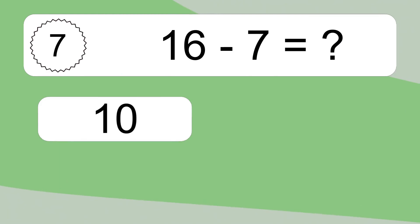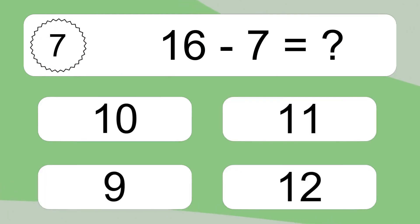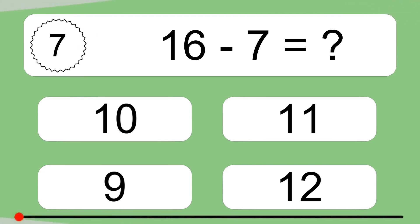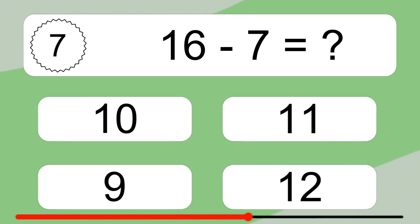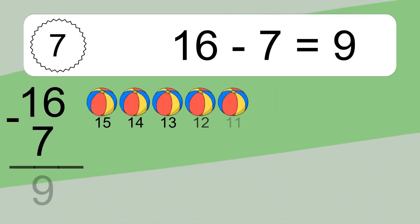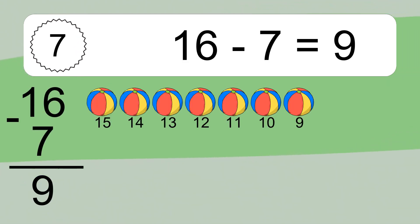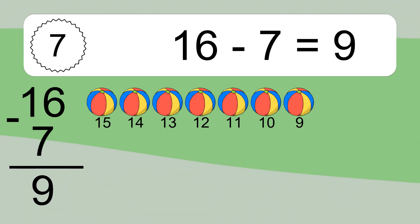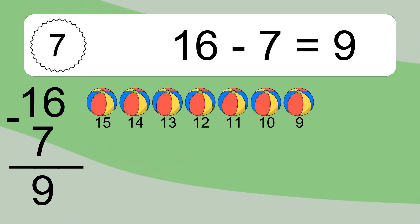16 minus 7 equals what? 16 minus 7 equals 9. Let's count it. 15, 14, 13, 12, 11, 10, 9.